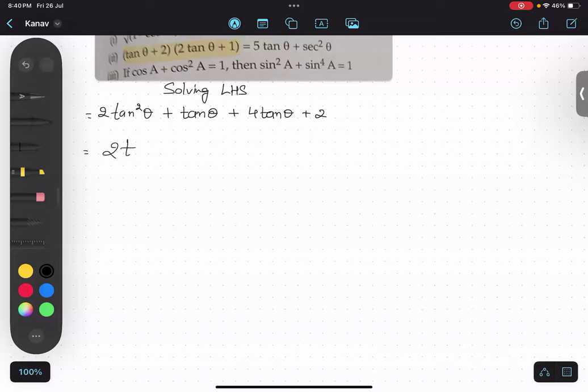So what will be the answer? 2 tan² θ plus 5 tan θ plus 2. Yes or no?